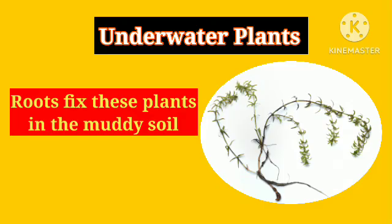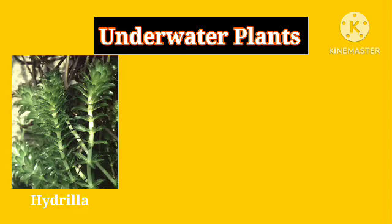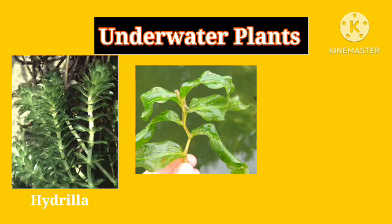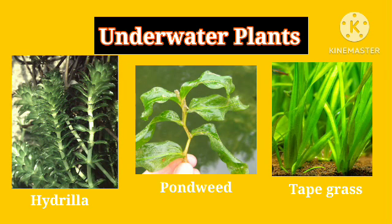They breathe in and out directly through their body surface. Hydrilla, pondweed, and tape grass are some underwater plants.